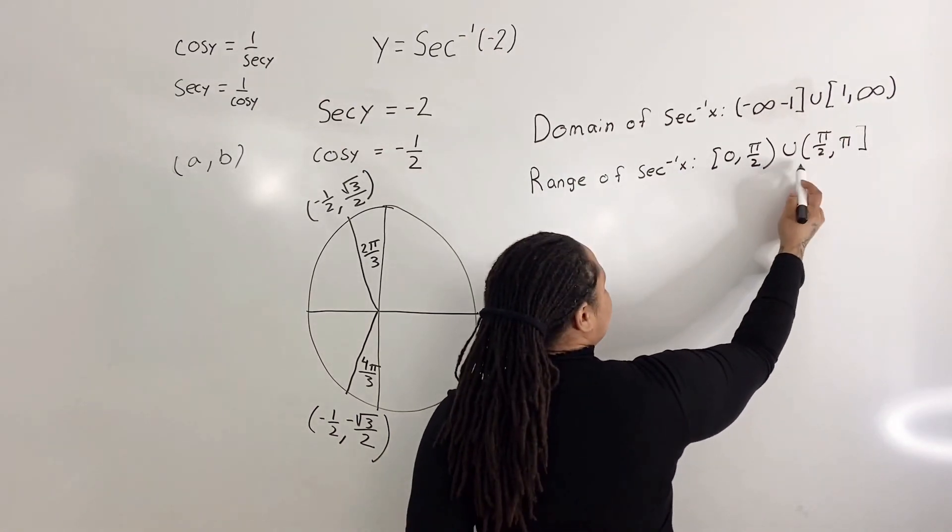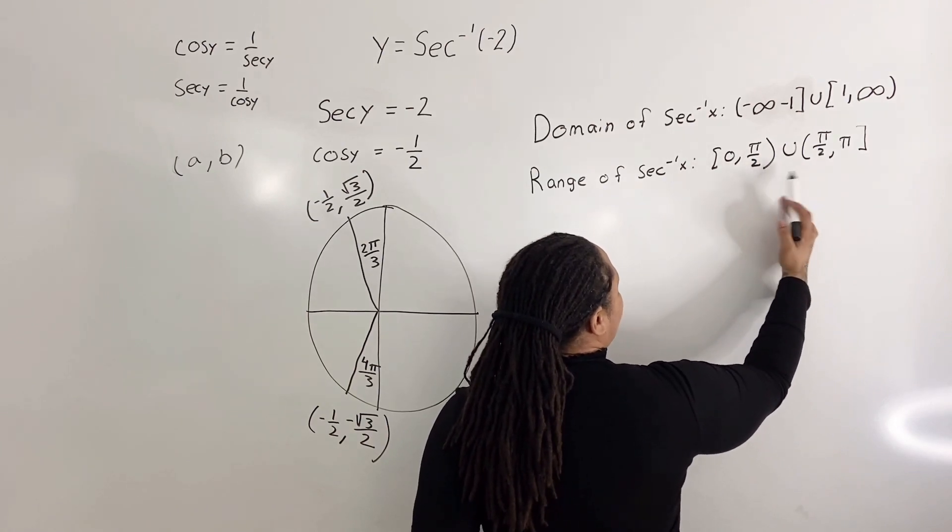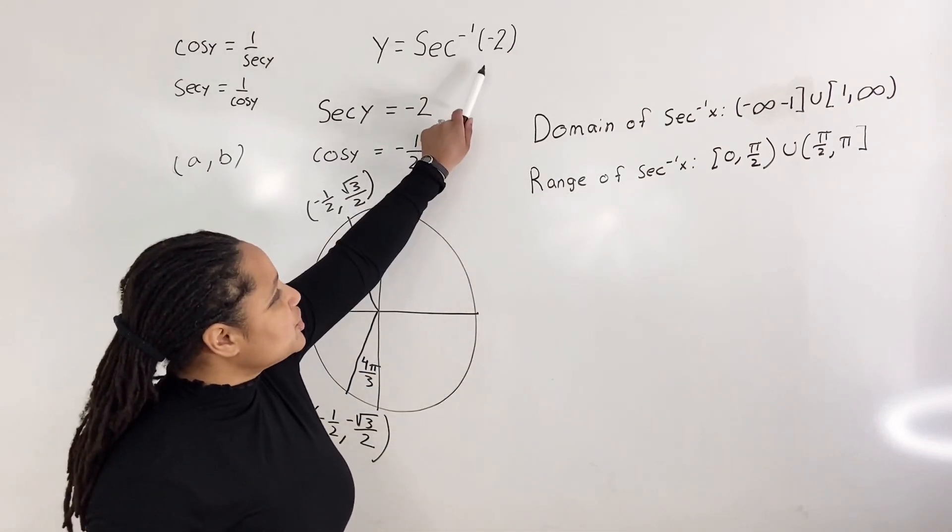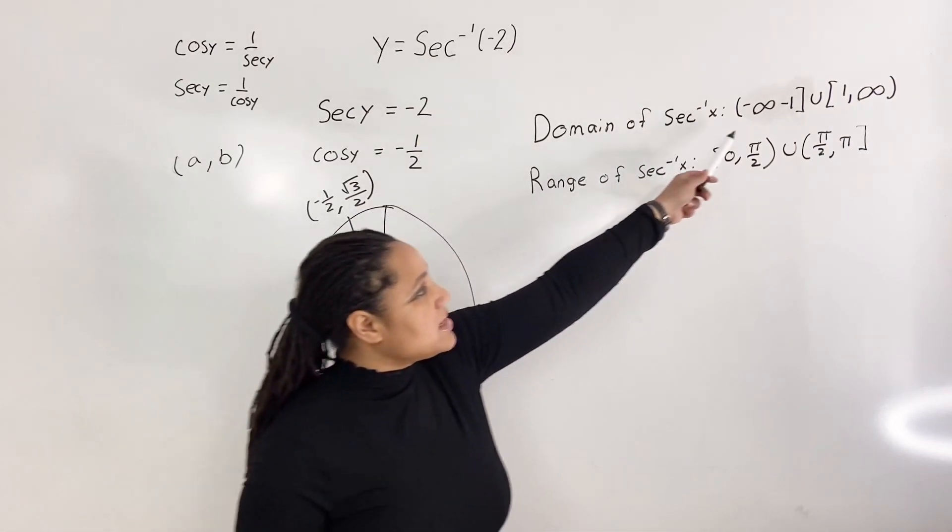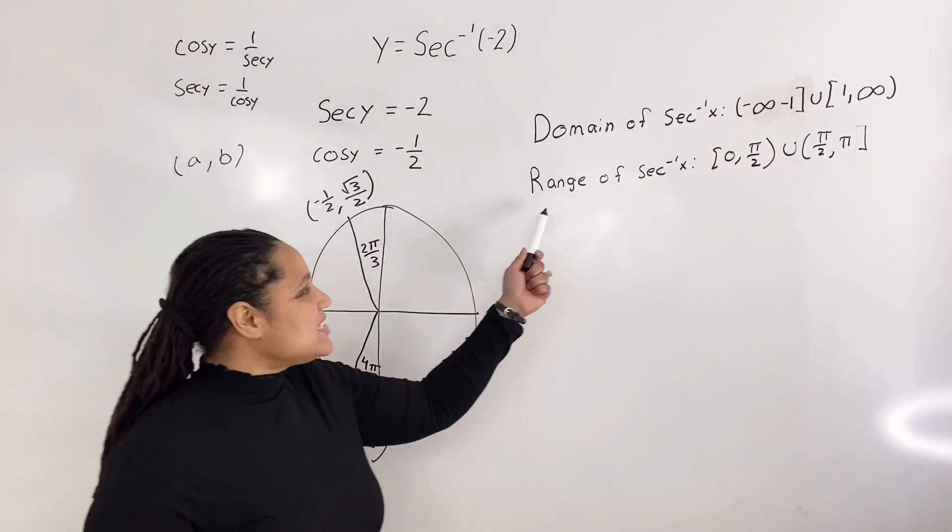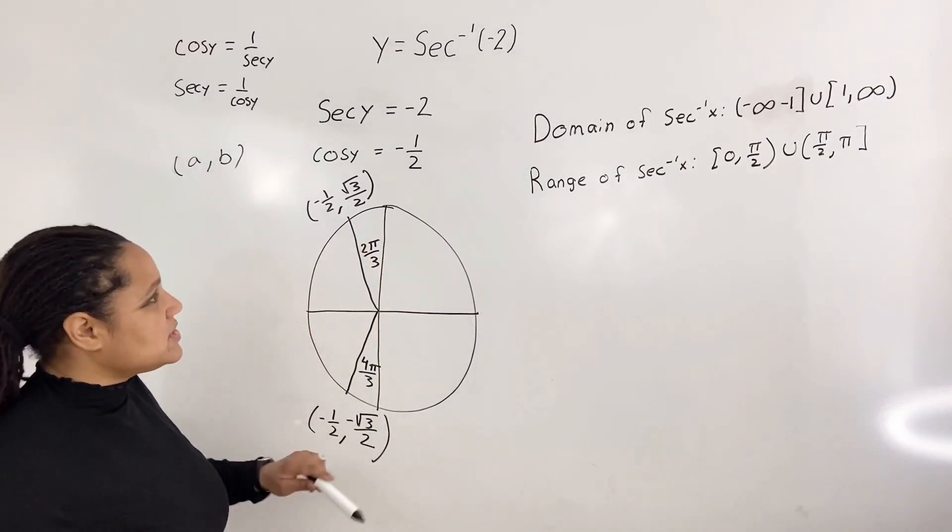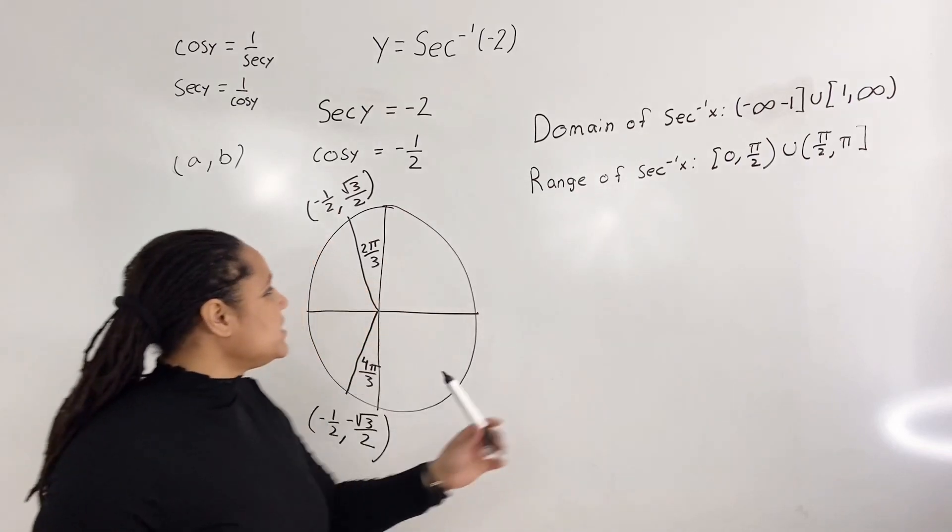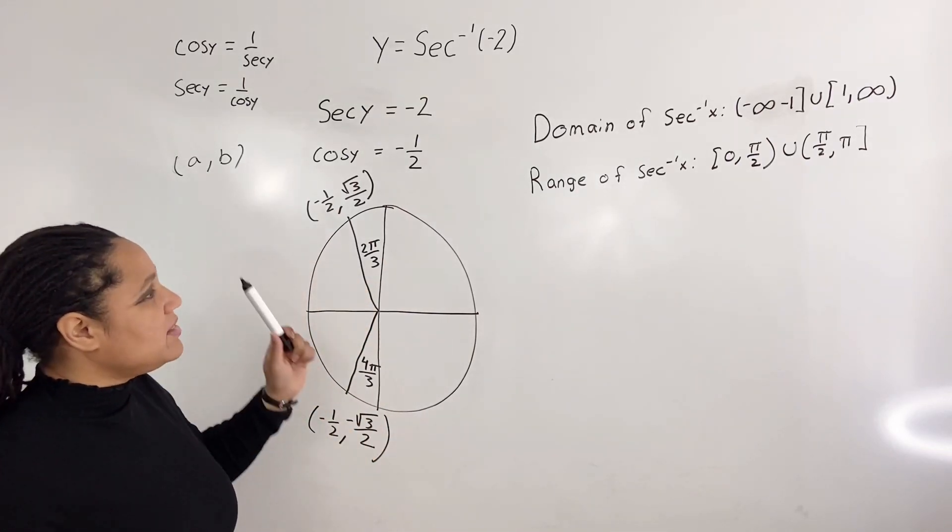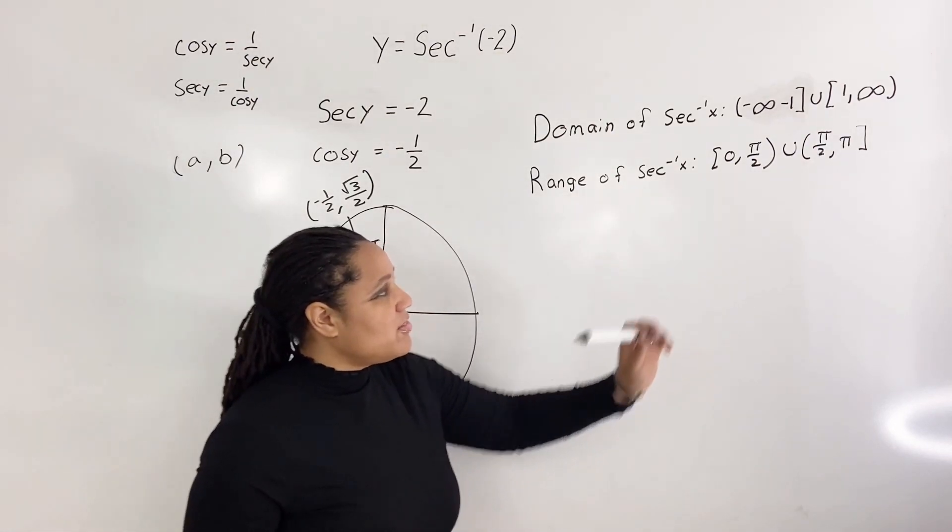Notice that we're using parentheses. This means that we're not actually including π over 2. Now clearly we see that negative 2 is within the domain, so our domain is satisfied. Now let us look at the range. Which one of these angles satisfy the range? Well, we see that 2π over 3 will be the only angle that we can choose that is within the range.